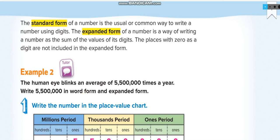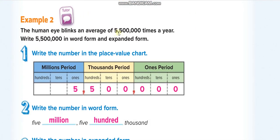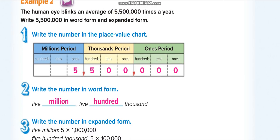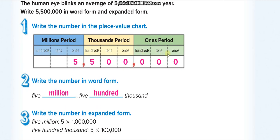Standard form is simply writing the number in digits — that's the standard form. Now they want us to write it in word form. For example, if you have 5,500,000: you read each period — there's a 5 in the millions period, so 'five million.' The next period has 500, which is in the thousands period, so 'five hundred thousand.' There's nothing in the ones period, so we stop there: five million, five hundred thousand.